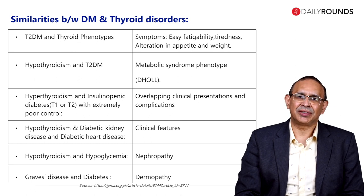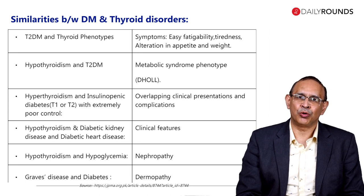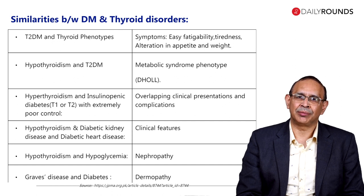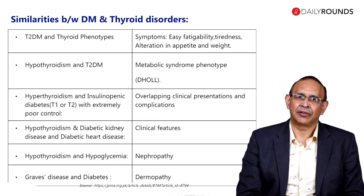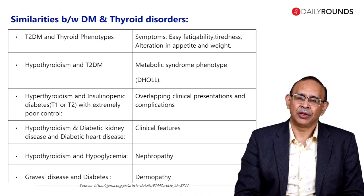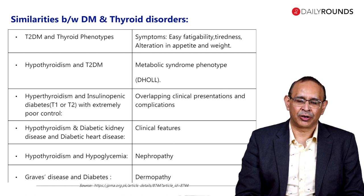Whenever someone presents with a metabolic syndrome phenotype — we have already mentioned the DOLE: dysglycemia, high BP, obesity, obstructive sleep apnea, polycystic ovary syndrome, fatty liver, and dyslipidemia — you have to think diabetes and you have to think thyroid.